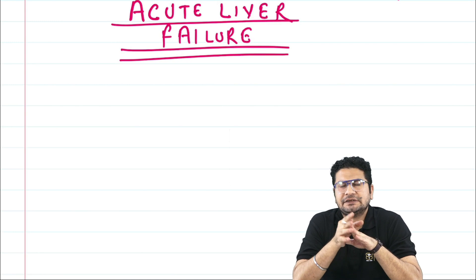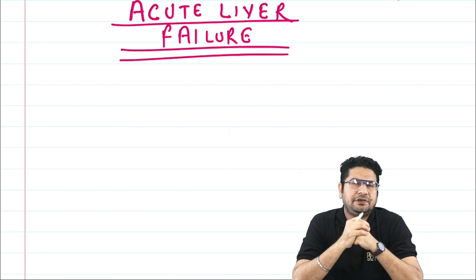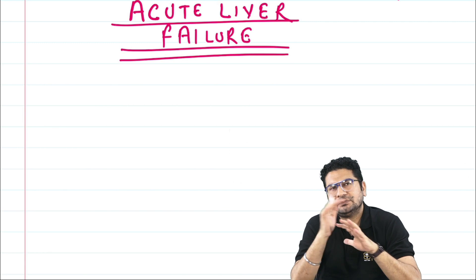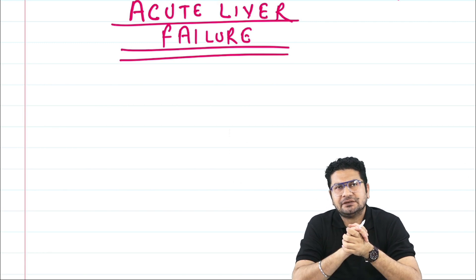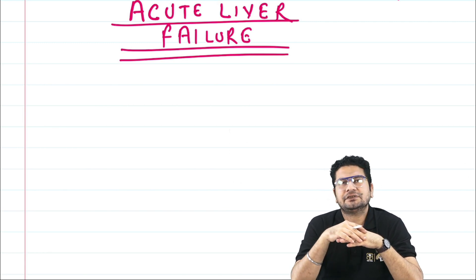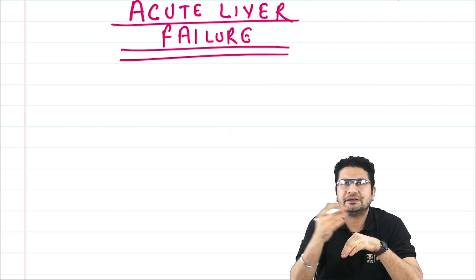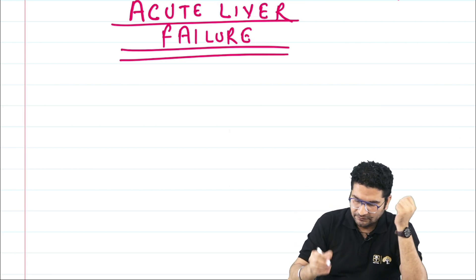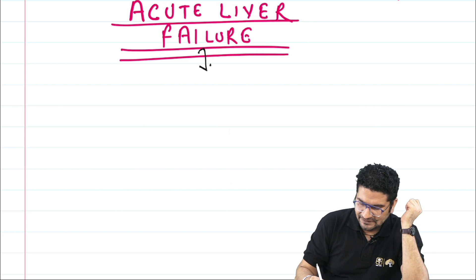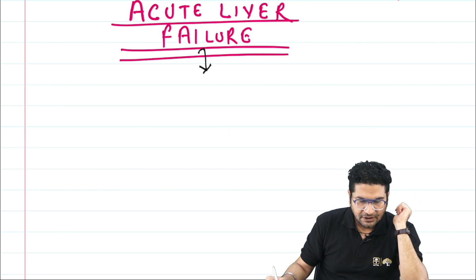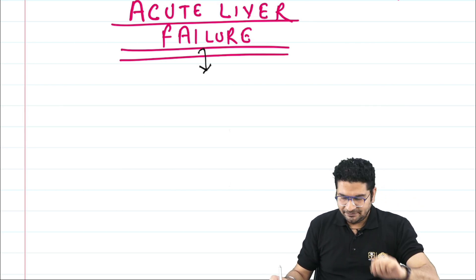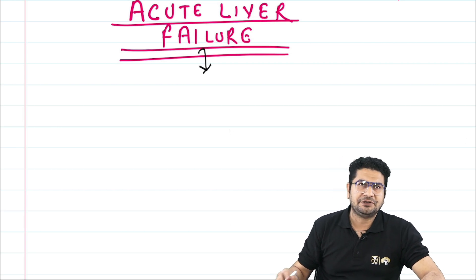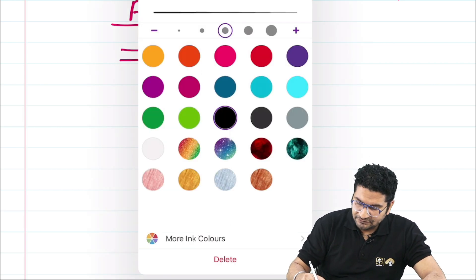The next topic is acute liver failure. A patient who was absolutely fine develops symptoms within a few days — including coagulopathy and CNS manifestations. These are the signs of acute liver failure. The underlying cause is some form of liver damage, which can be due to certain drugs, viruses, or toxins.